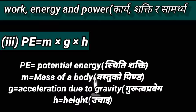Number three: PE equals m into g into h, where PE equals potential energy (ishtiti sakti), m equals mass of a body (bastu ko pinda), g equals acceleration due to gravity (goruto pravek), and h equals height.